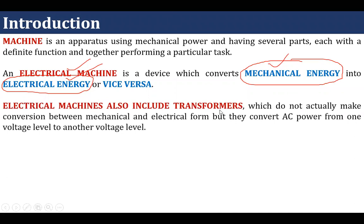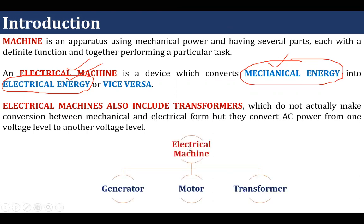Electrical machines also include transformers, which do not actually make conversion between mechanical and electrical form, but they convert AC power from one voltage level to another voltage level. There are three types of electrical machines: generator, motor, and transformer. A generator, as its name indicates, takes mechanical energy as input and generates electrical energy. A motor takes electrical energy as input and produces some mechanical output like rotation. A transformer converts AC power from one voltage level to another voltage level.